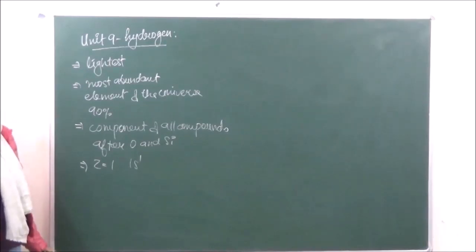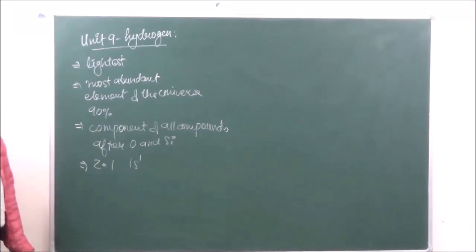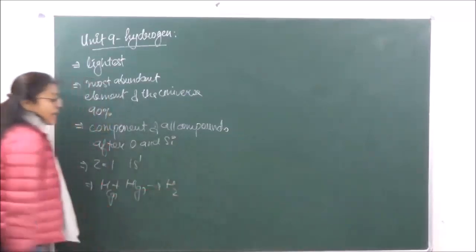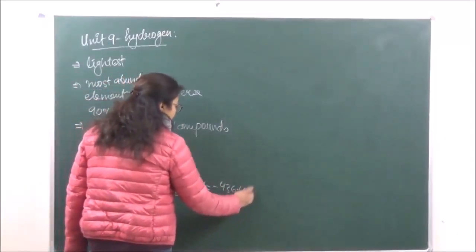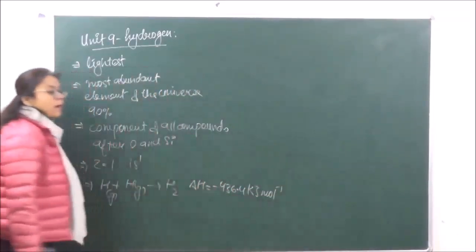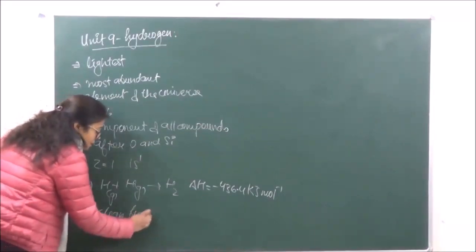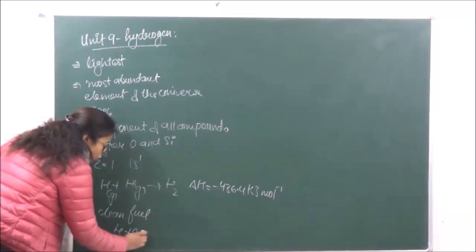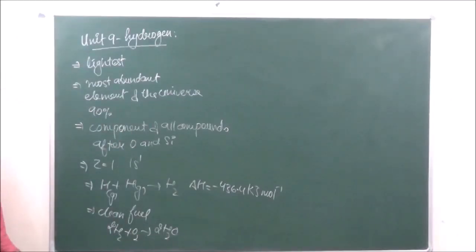Hydrogen is found in the sun due to very efficient reactions taking place there, making it a major component of the universe and the sun both. Hydrogen can be prepared by the combination of atomic hydrogen where the delta H is minus 436.4 kJ per mole. We also call Hydrogen a clean fuel because the oxidation of it — when we burn it — produces water. That is the reason why it is known as a clean fuel.